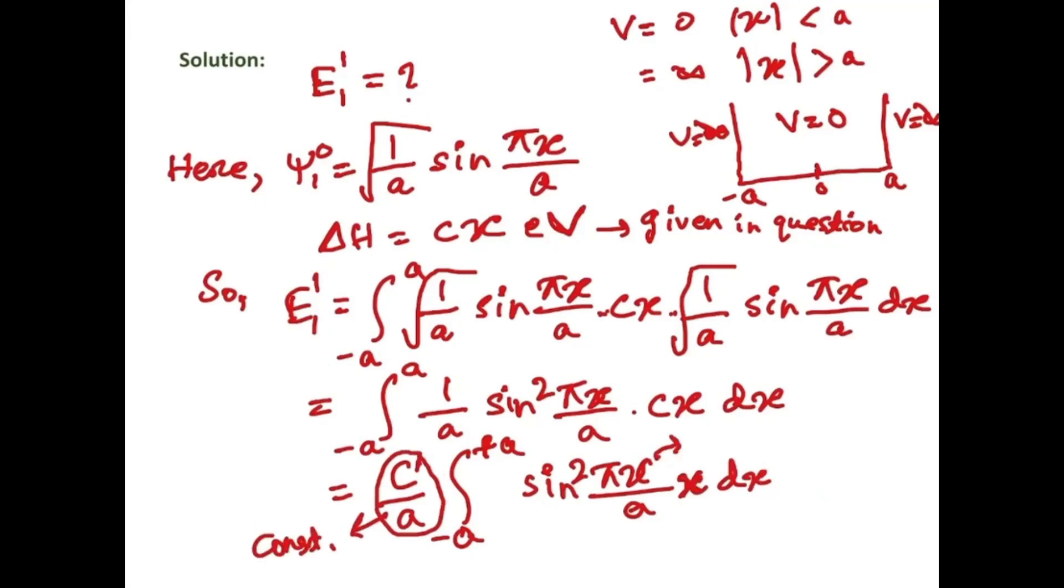Now sin square pi x by a is an even function and x is an odd function, so this total term will be an integral of an odd function with a symmetrical interval. So this value will be equal to c by a multiplied with this integral value will become 0, that will be equal to 0.